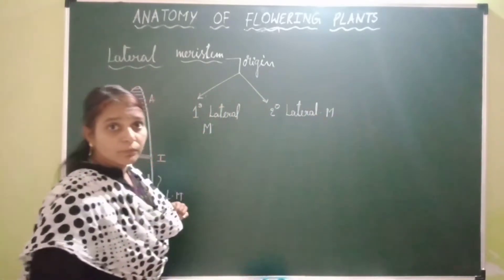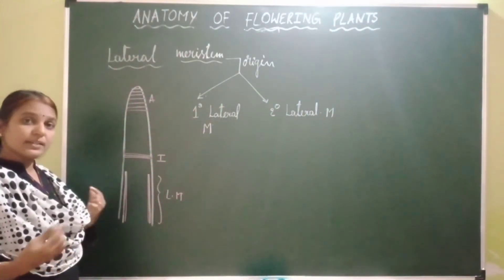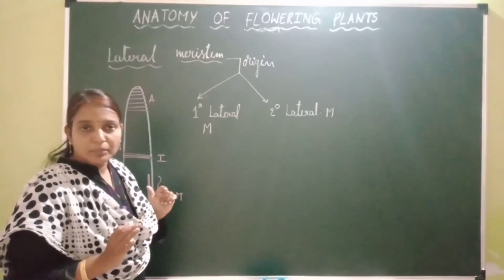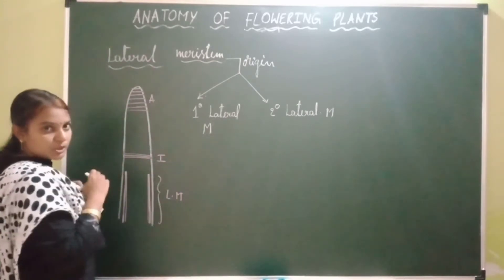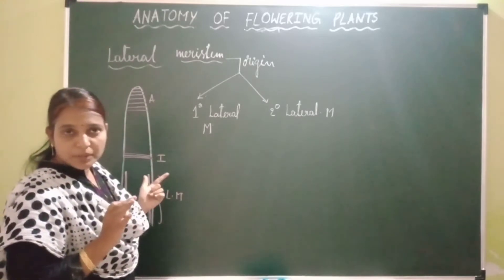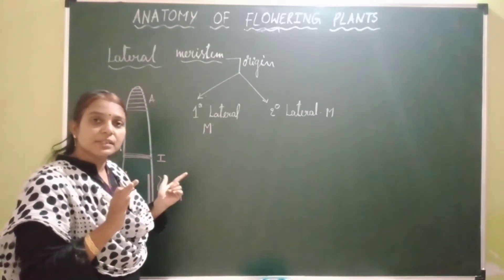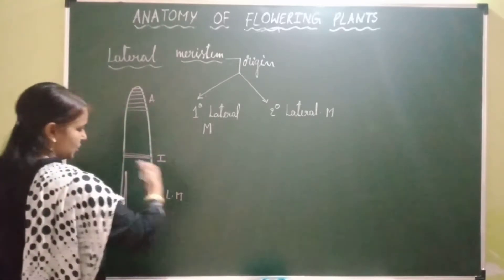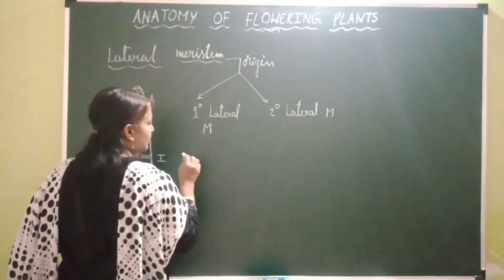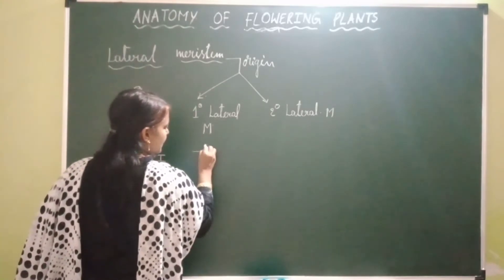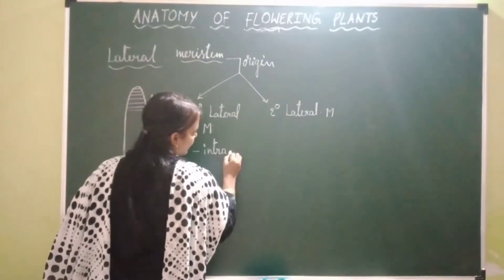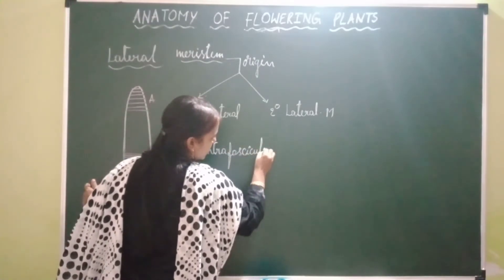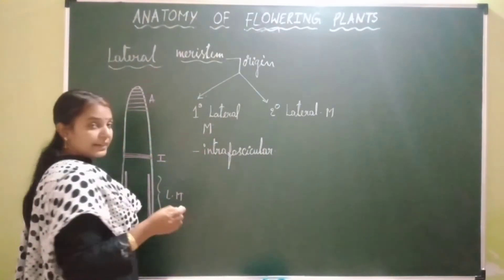Primary means origin is primary, lateral means position is lateral. So primary in origin means it is present from the beginning of plant life. The only primary lateral meristem is intrafascicular vascular cambium, present in dicot stem and the stem of gymnosperms.